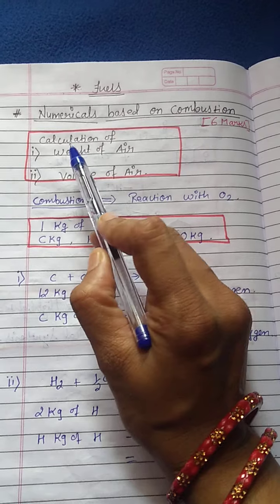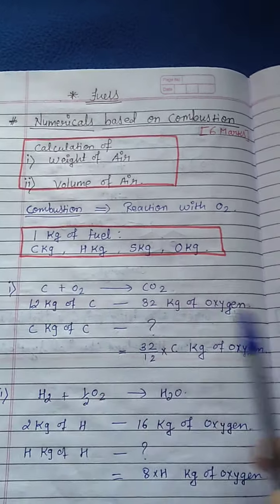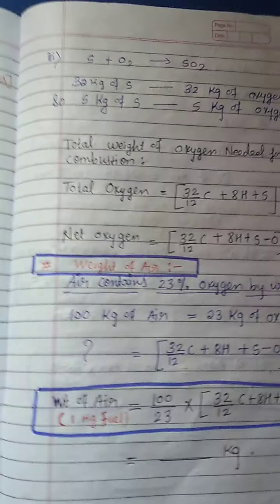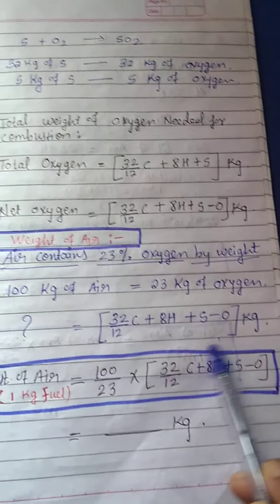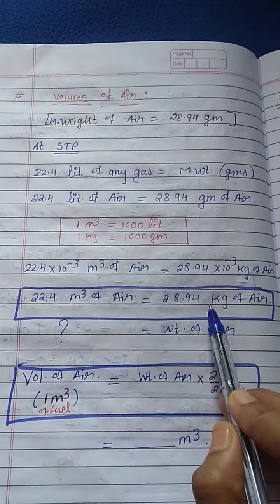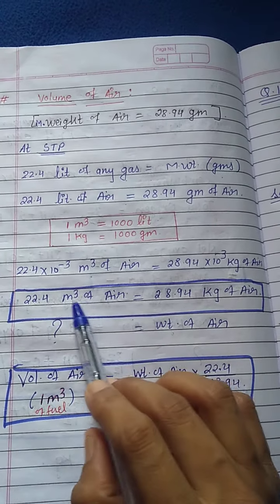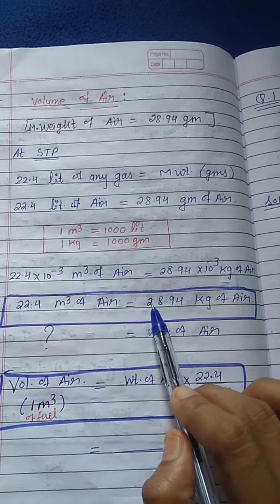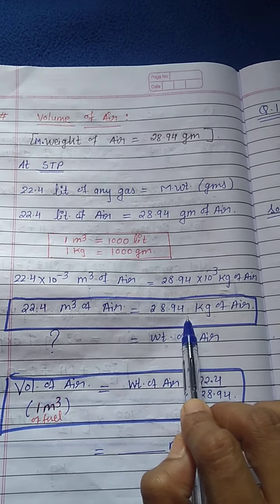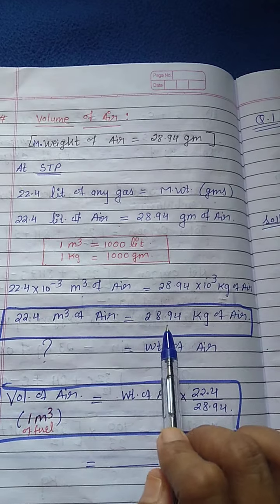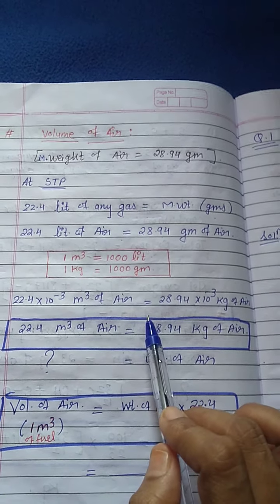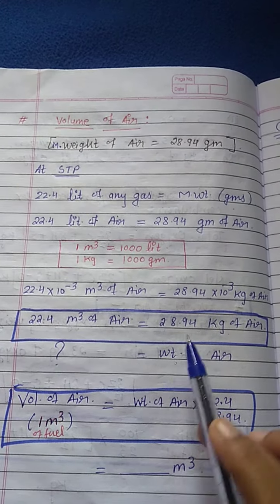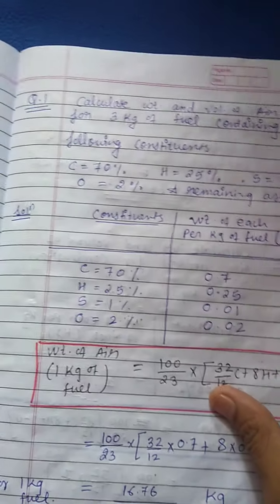So we have learned two things: how to calculate weight of air and how to calculate volume of air. Weight of air for 1 kg of fuel = 100/23 × (32/12 × C + 8H + S − O) kg. For volume of air, no need to memorize a separate formula — just use the relation: 22.4 m³ of air = 28.94 kg of air. Use this relation to convert weight of air to volume or volume to weight. This completes the theory part.